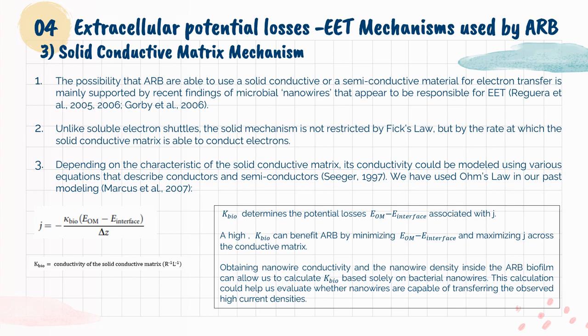The third mechanism is the Solid Conductive Matrix mechanism. The possibility that ARB are able to use a solid or semi-conductive material for electron transfer is mainly supported by recent findings of microbial nanowires that appear to be responsible for EET. Unlike soluble electron shuttles, the solid mechanism is not restricted by Fick's law, but by the rate at which the solid conductive matrix is able to conduct electrons. Depending on the characteristics of the solid conductive matrix, its conductivity could be modeled using various equations that describe conductors and semiconductors. We have used Ohm's law in our past modeling based solely on bacterial nanowires. This calculation could help us evaluate whether nanowires are capable of transferring the observed high current densities. K-bio determines the potential losses E-OM minus E-interface associated with J.